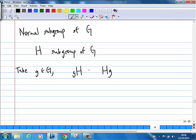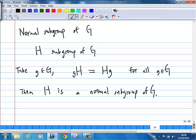If the left coset and the right coset are equal for all g in the group G, then H is a normal subgroup of G. This is how you know a subgroup is normal.